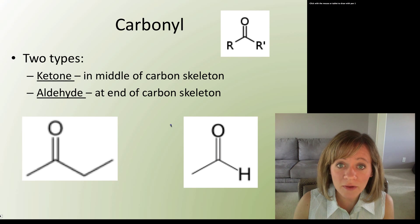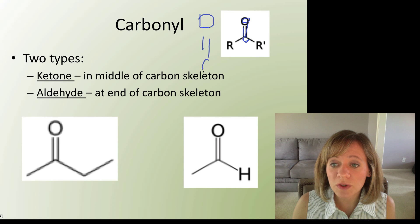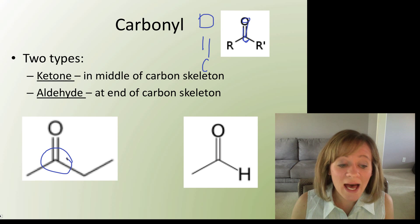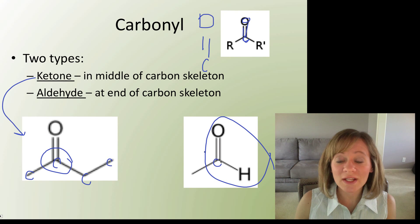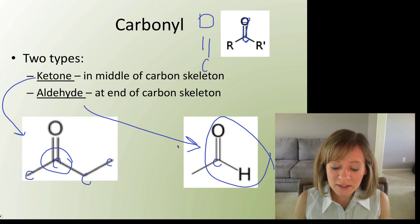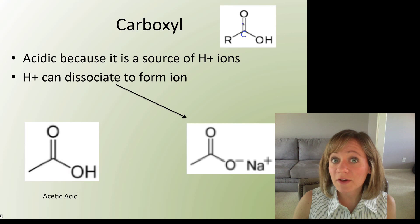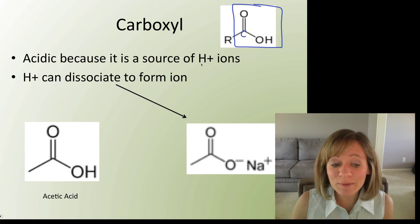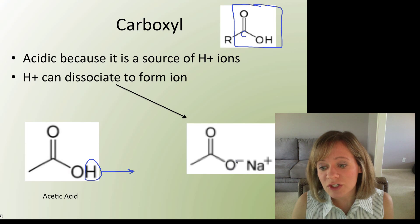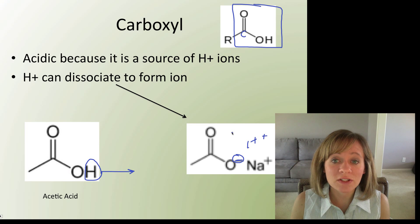The carbonyl group is a carbon double bonded to an oxygen. It can occur inside a chain, where it's called a ketone, or at the end of a chain, where it's called an aldehyde. Next, the carboxyl group is a carbon double bonded to an oxygen and also bonded to a hydroxyl. This whole group is acidic because it can donate a hydrogen — an acid donates a hydrogen — leaving the group with a negative charge. Carboxyls are always acidic, also called carboxylic acid. An example is acetic acid.